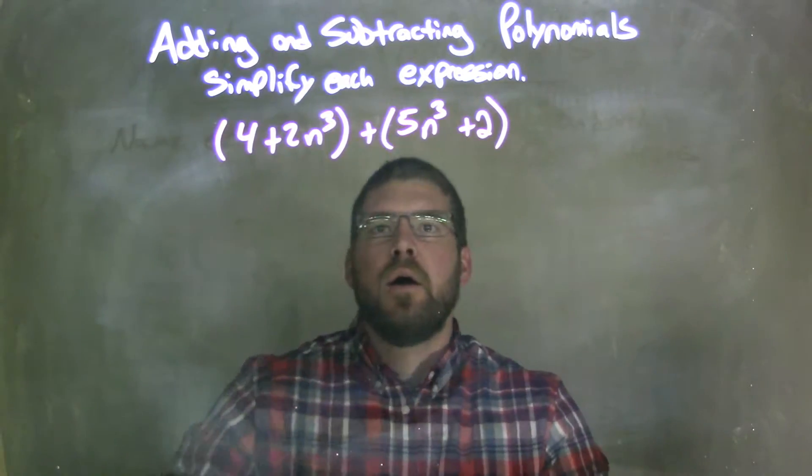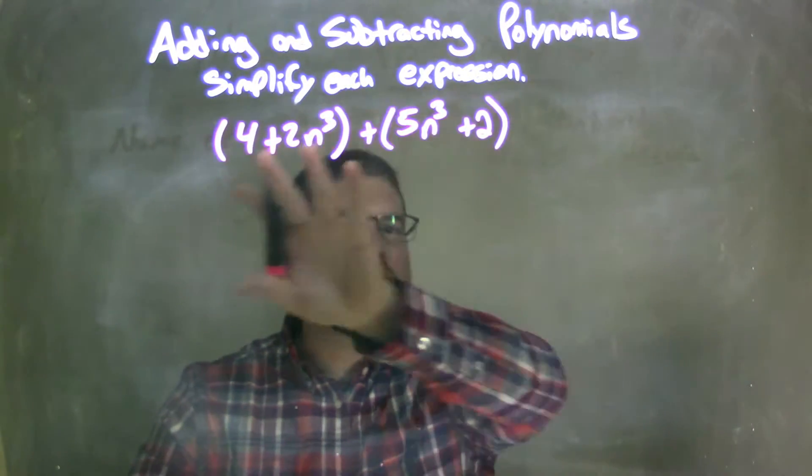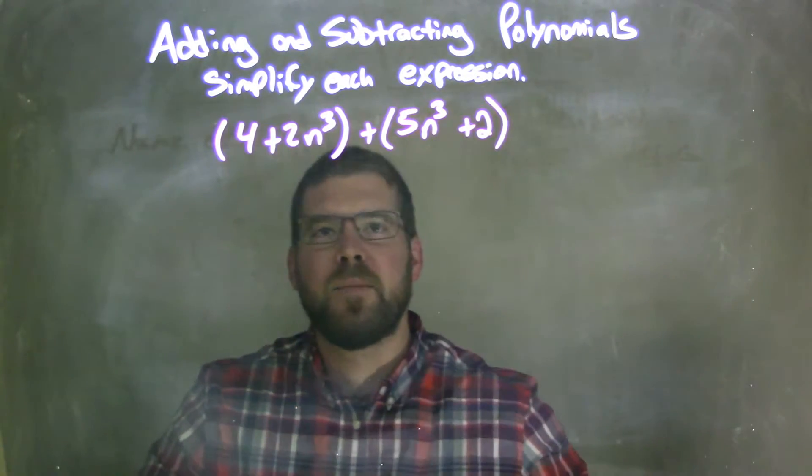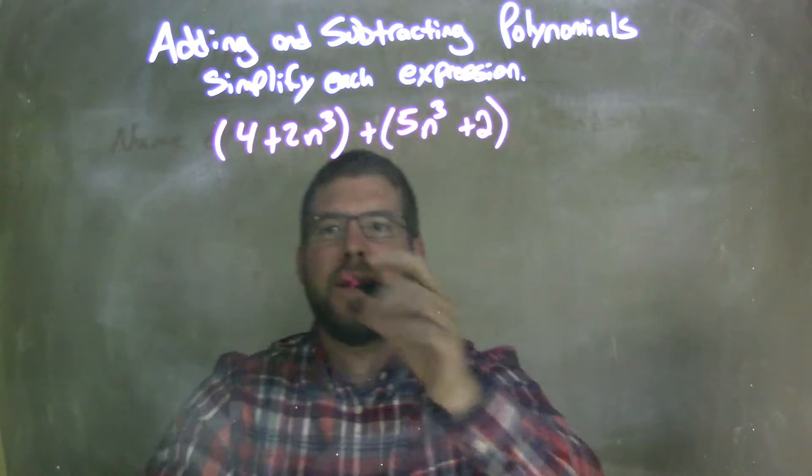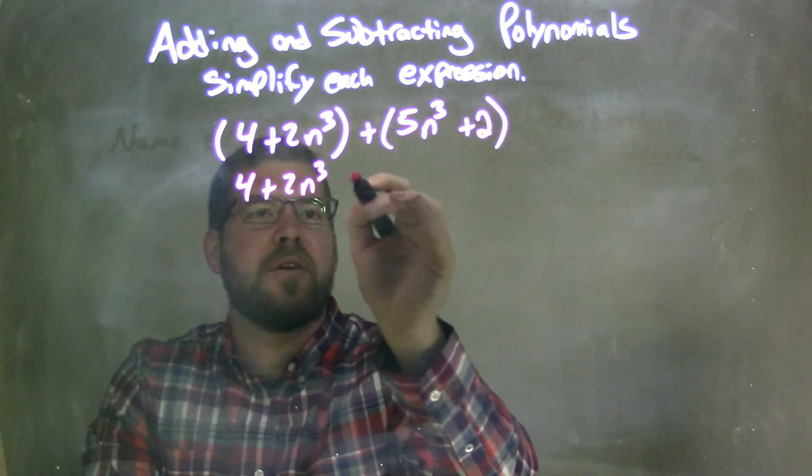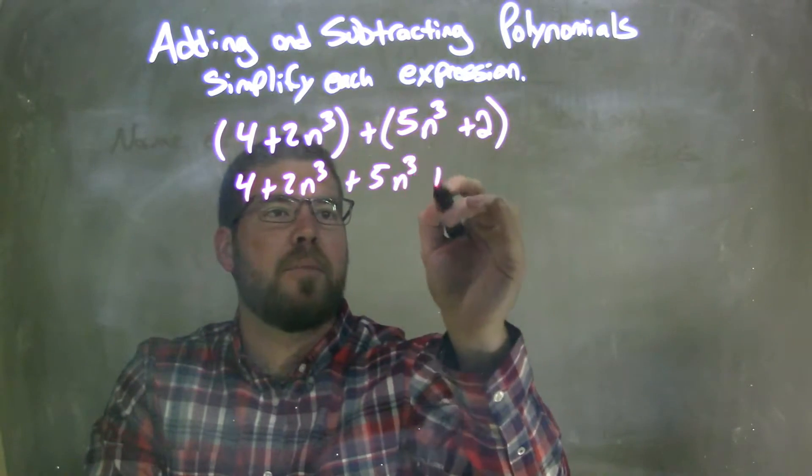Well, since it's all addition in each parentheses, we don't have anything that we can simplify within the parentheses. At that point, we can eliminate our parentheses. So we have 4 plus 2n to the 3rd plus 5n to the 3rd plus 2.